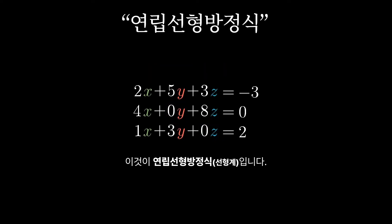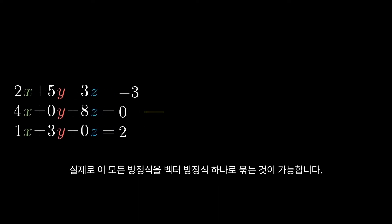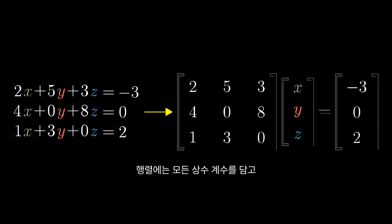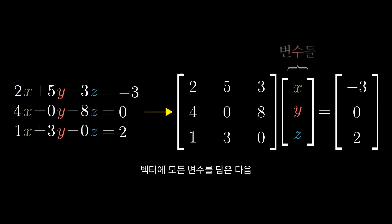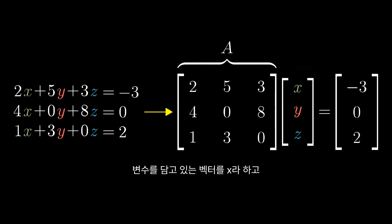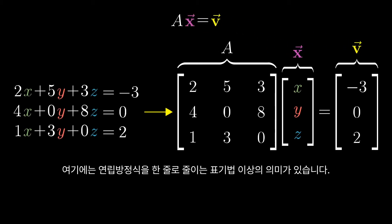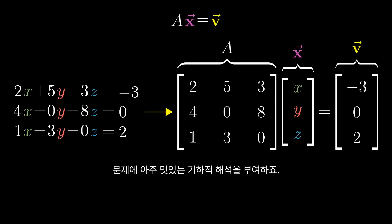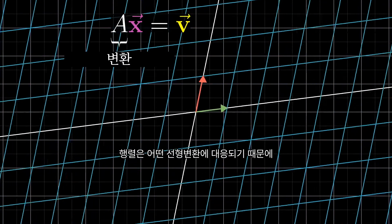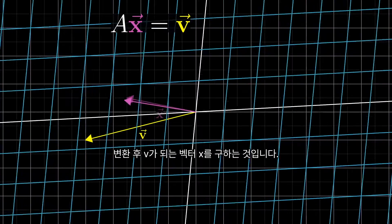This is called a linear system of equations. You might notice that this looks a lot like matrix-vector multiplication. In fact, you can package all of the equations together into a single vector equation, where you have the matrix containing all of the constant coefficients and a vector containing all of the variables, and their matrix-vector product equals some different constant vector. Let's name that constant matrix A, denote the vector holding the variables with a bold-faced x, and call the constant vector on the right-hand side v. This is more than just a notational trick to get our system of equations written on one line — it sheds light on a pretty cool geometric interpretation for the problem. The matrix A corresponds with some linear transformation, so solving Ax = v means we're looking for a vector x which, after applying the transformation, lands on v.